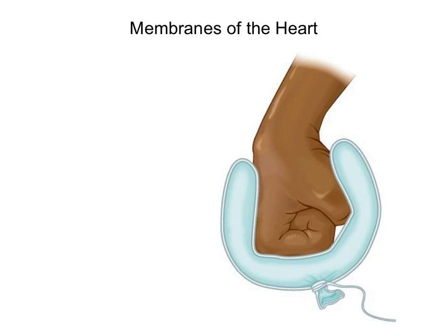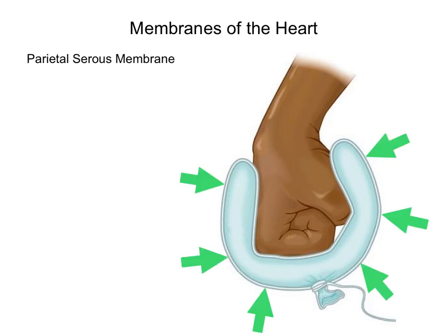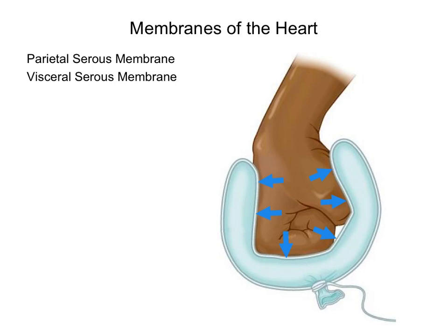Next, we'll discuss the membranes of the heart. The membrane that surrounds the heart is a serous membrane, and before we can talk about the membrane of the heart, we need to discuss the different parts of a serous membrane. The first part is called the parietal serous membrane, which is the outermost membrane surrounding the organ. The second part is the visceral serous membrane, which is the innermost membrane. Between them is the third part, called the serous cavity.